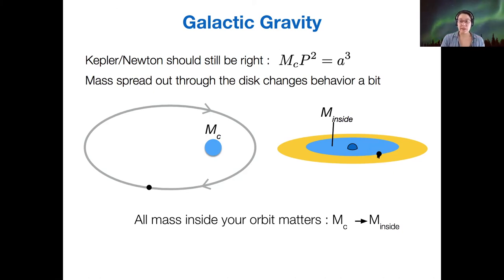So for example, if this object here is outside of this blue region, then we can calculate all the mass inside its orbit closer to the center of its orbit by calculating using this equation. So it's only the mass inside your orbit that matters to determine your orbital period.